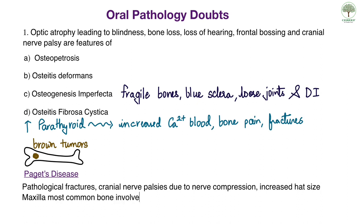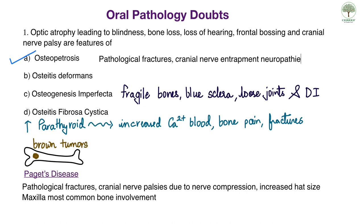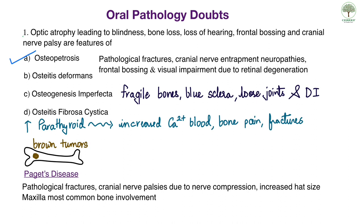The correct answer is osteopetrosis, which shows pathological fractures, cranial nerve entrapment, neuropathies or neural palsies, frontal bossing, and visual impairment due to retinal degeneration. In the question, the key distinguishing features are optic atrophy and frontal bossing, so we go with osteopetrosis.